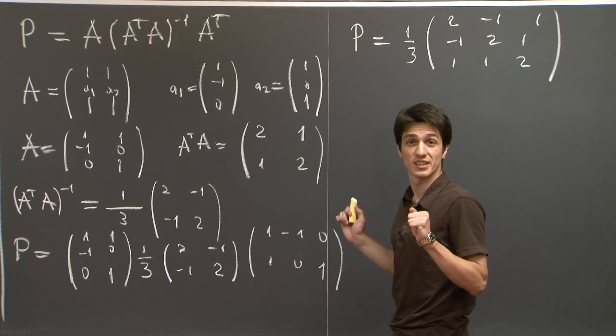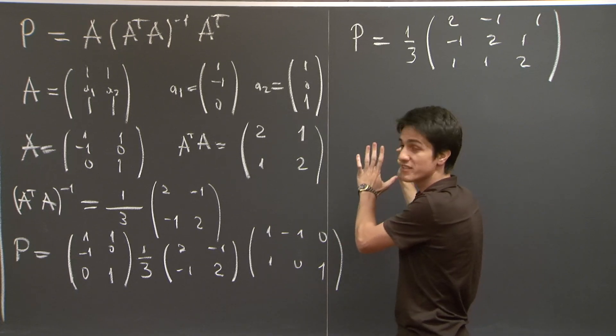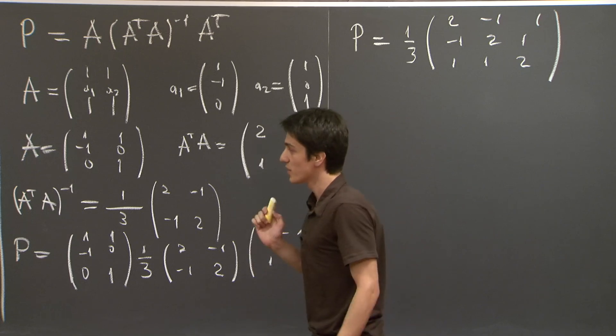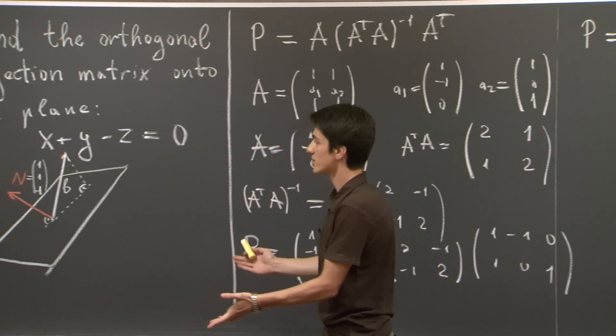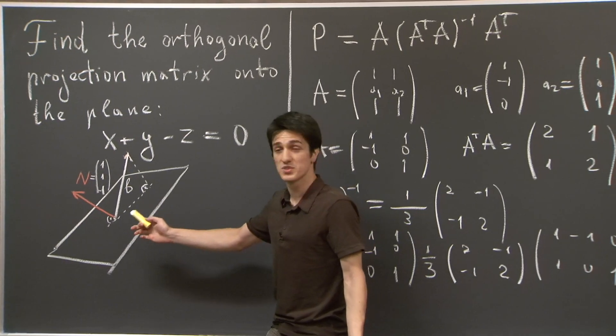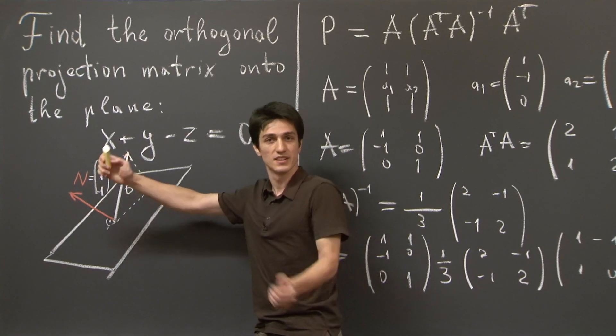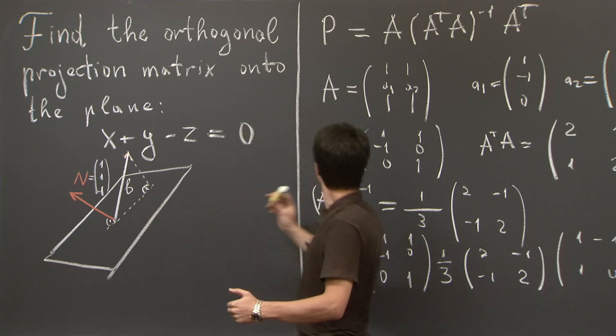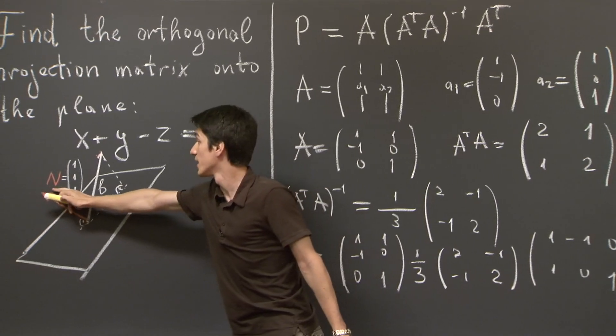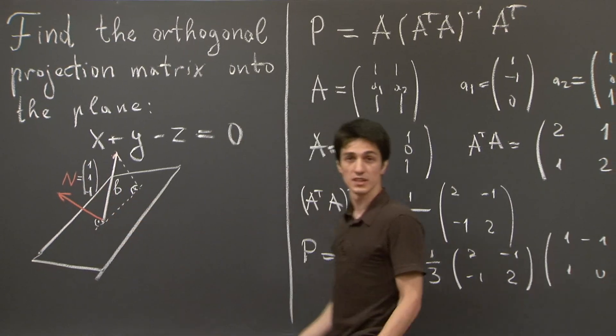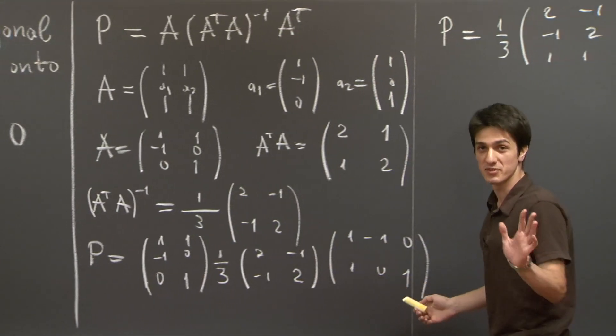So what you can do now is, you can check whether this answer actually makes sense. One thing you can do is, a projection matrix is supposed to take the normal to the plane down to 0. So you can just multiply p and the normal vector, 1, 1, negative 1, and if you get 0, maybe you've done a good job.